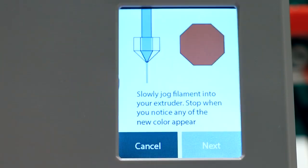At this point, we are prompted to jog the filament through the extruder until we see the very next appearance of the new color. We want to stop loading the filament immediately when we see the new color. This is why we loaded the clear filament into the extruder before, to help us see the new color more easily. Watch as we stop the extruder as soon as we see the color change.